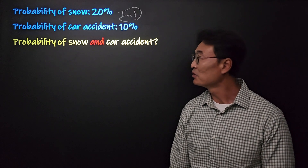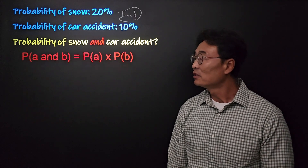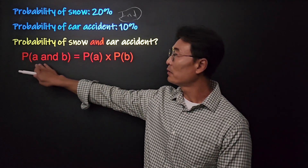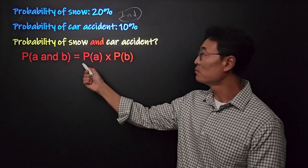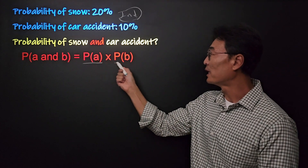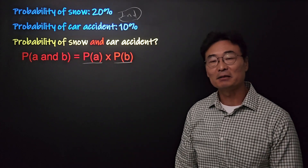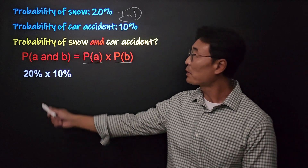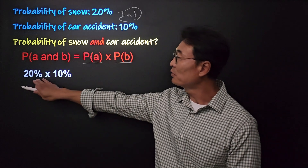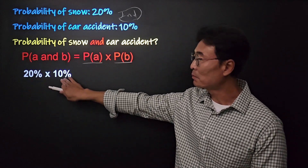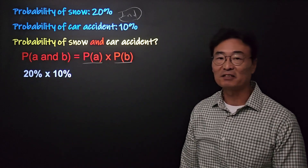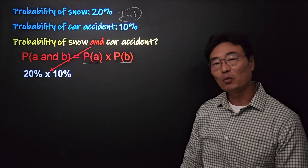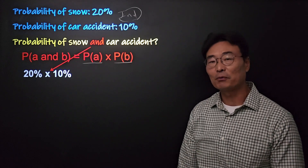The definition is that if you're looking for the probability of A and B, you need to multiply the probability of A and the probability of B. So here, probability of snow is 20% and probability of car accident is 10%, so we multiply the two probabilities.